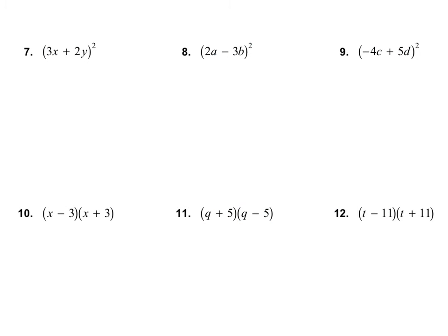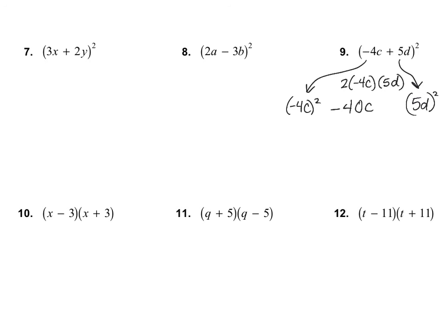Let's take a look at number 9. I take my first term and square it: that's negative 4c squared, giving 16c squared. My last term is 5d, all quantities squared, giving 25d squared. My middle term is 2 times negative 4c times positive 5d: 2 times negative 4 is negative 8, times 5 is negative 40, times cd. So the final answer is 16c squared minus 40cd plus 25d squared.